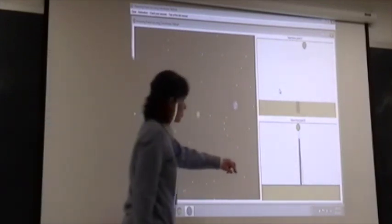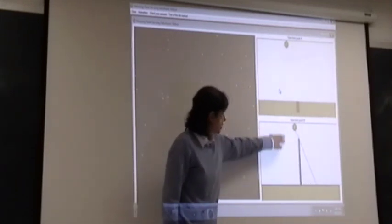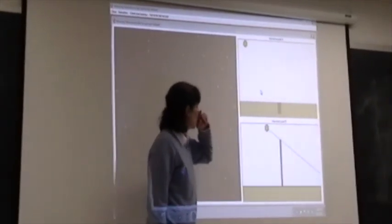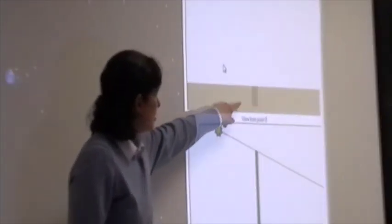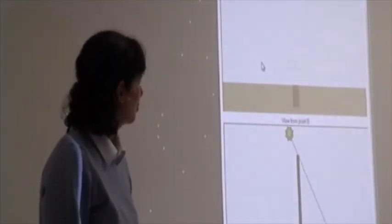The bottom picture right here shows you the view of the shadow that's being cast from one point on the Earth. The top point right here shows you the shadow that's being cast at another point.